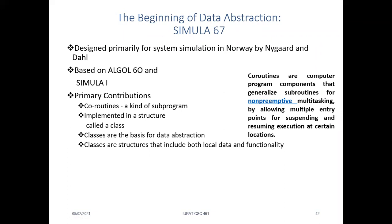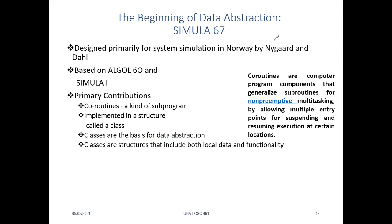What are the primary contributions of Simula 67? First, it has a coroutine that is a kind of sub-program. It implemented a structure called class, which we use in C++ and Java today. Classes are the basis of data abstraction, and classes are structures that include both local data and functions. All of you already know about classes from your C++ and Java courses.